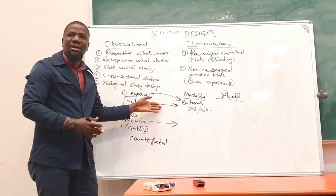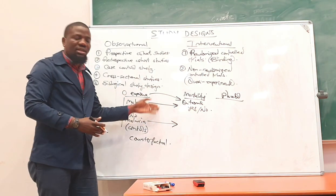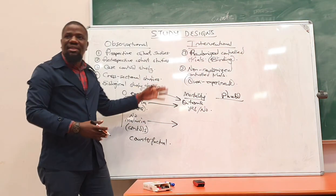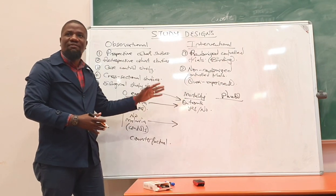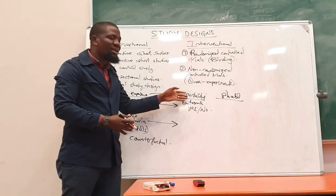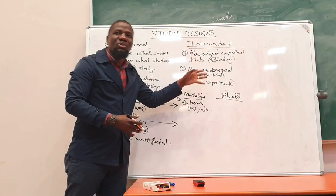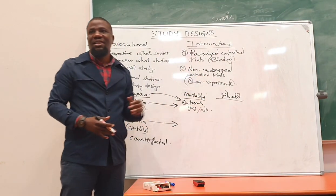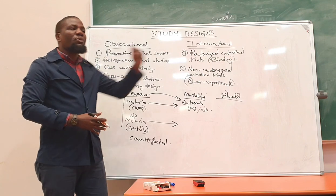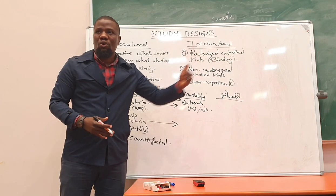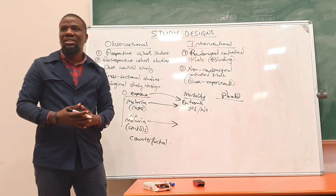After two weeks, participants came back and we checked their kidney function. After one month, they came back and we checked again. After three months, they came back and we checked their kidney function once more. That is a prospective cohort study — the follow-up was active and happening in real time, moving forward.